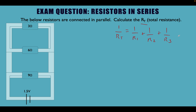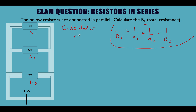Let's label these up. So 3 ohms is R1, 6 ohms is R2, and 9 ohms is R3. Now there are a couple of ways of doing this. There's one with a calculator, which I'm going to show you in this example, and then there's one using the lowest common denominator, which we'll do in the next video. So we've got three resistors here — let's do the calculator method.